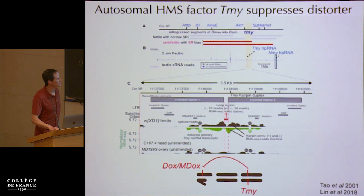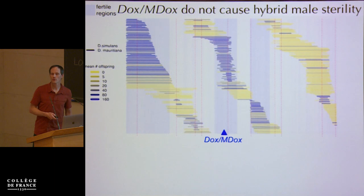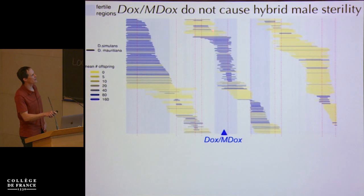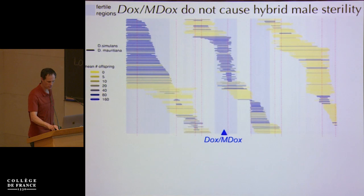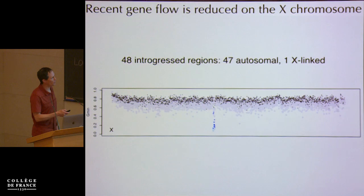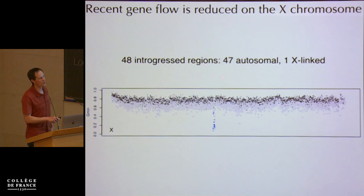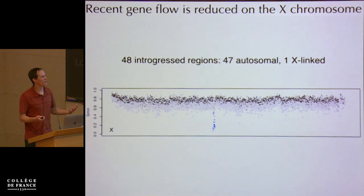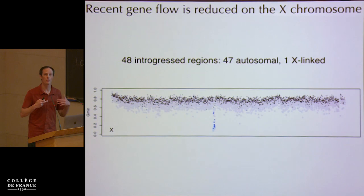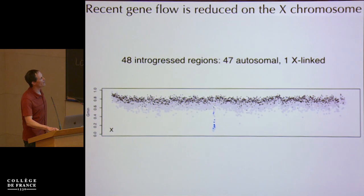This seems like a really tight story — or is it? What about DOXS? Is DOXS one of our X-linked hybrid sterility factors? In fact it certainly is not — DOXS and MDOX sit right in a zone that is fertile, not near a hybrid sterility locus at all. And it gets weirder: going back to our introgression study, of those 48 introgressed regions, 47 are autosomal. Only a single one is X-linked, which is a significant reduction of introgression on the X chromosome, making sense given that the X is riddled with hybrid sterility.